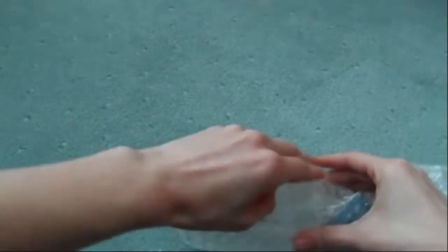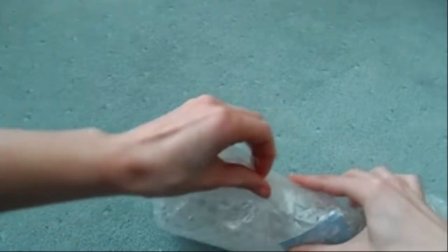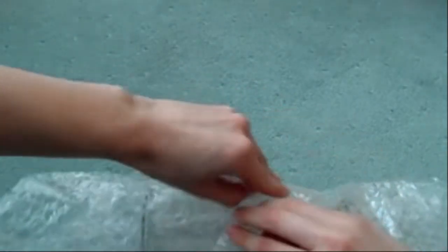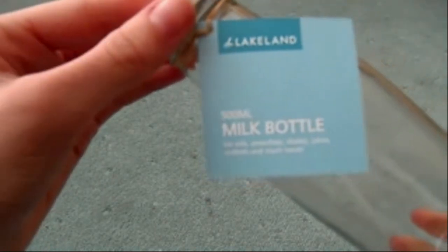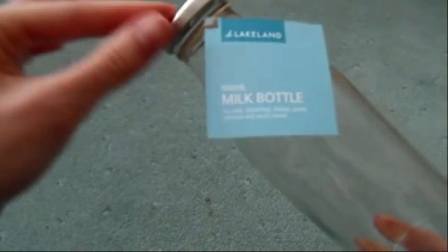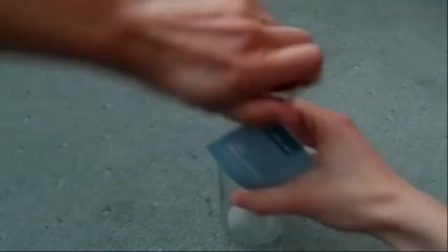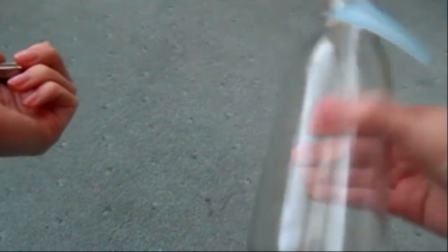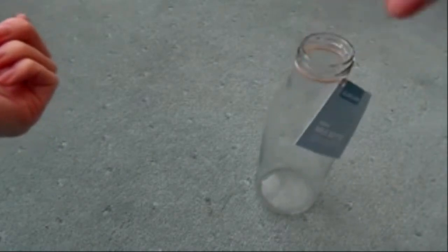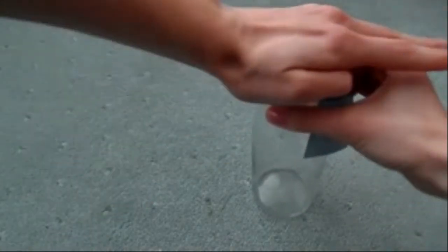Then also, you might recognize this from Zoella's haul on Sunday. I thought I need one of those too, so I went to Lakeland and bought a 500 milliliter milk bottle. It says it's for milk, smoothies, shakes, juices, cocktails and much more, and it's dishwasher safe which is good. Basically it's a milk bottle with a nice silver cap and you can have drinks in it.